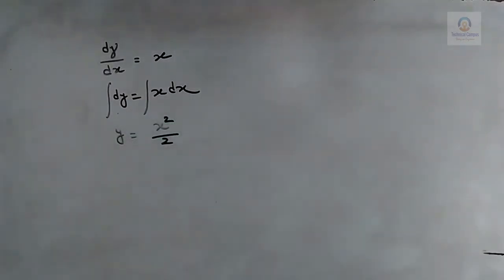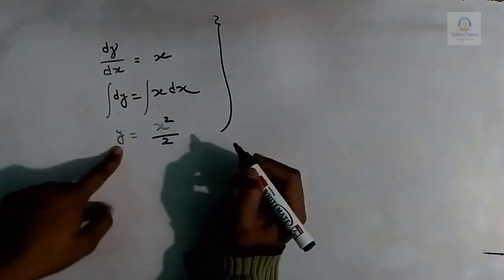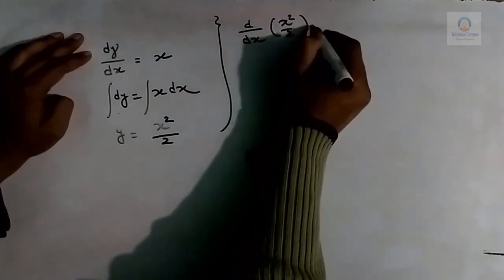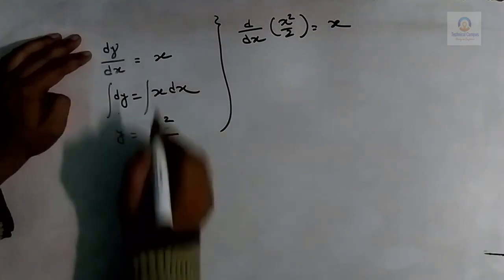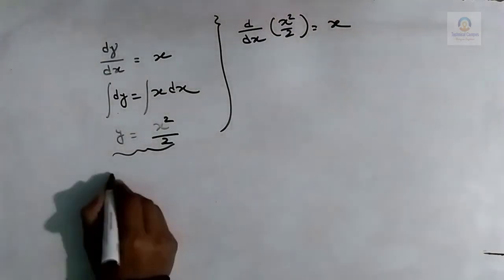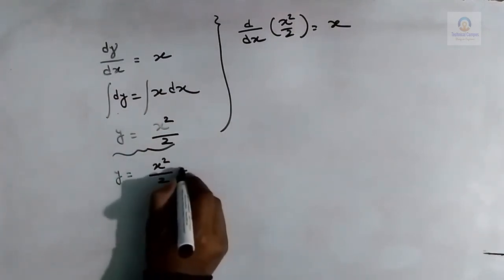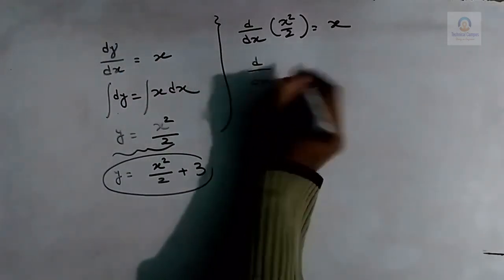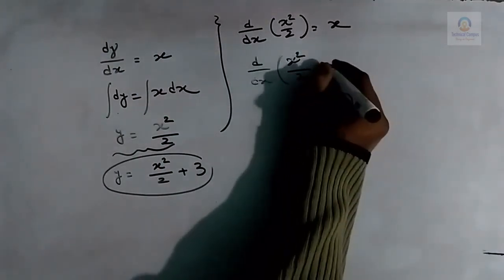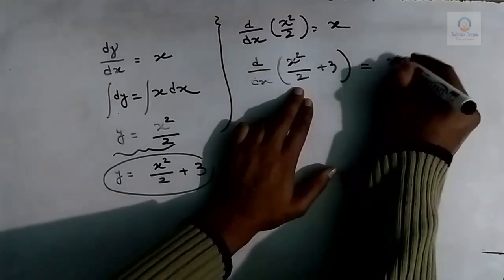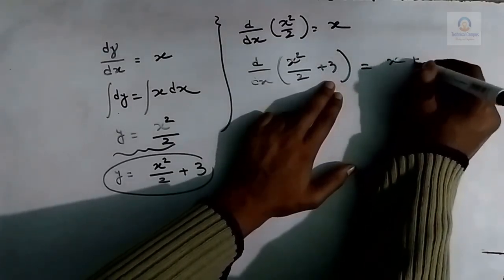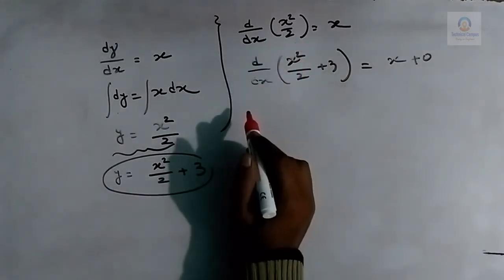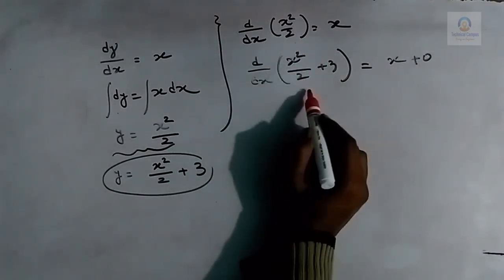Suppose we do not consider any constant. If we verify: d/dx of (x²/2) = x — correct. Now suppose y = x²/2 + 3. Putting this into the equation: d/dx of (x²/2 + 3) = x + 0 = x. So the differentiation of x²/2 gives the same result as the differentiation of x²/2 + 3, which is just x.